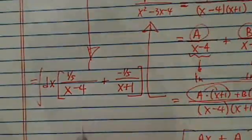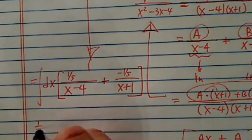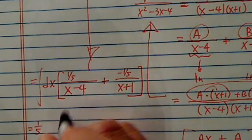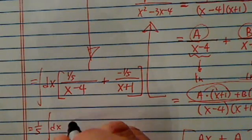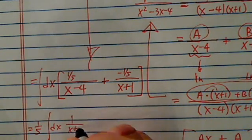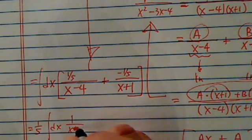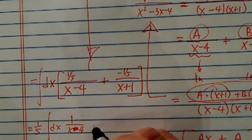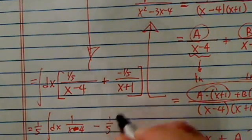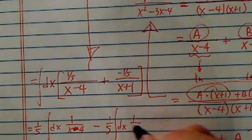This is pretty easy from here. This 1/5 gets out. Then I have the integration of dx, 1 over x minus 4. Then minus 1/5, the integration of x plus 1.